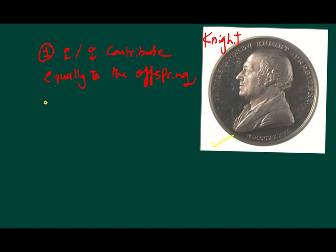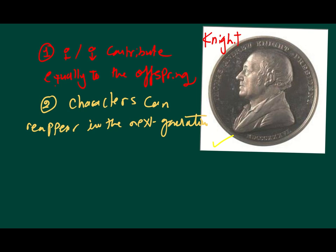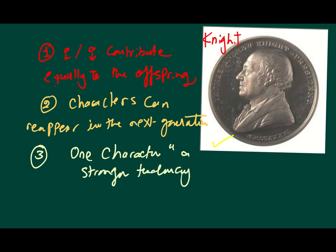Secondly, he said that characters such as white flower color that apparently disappear in offspring can reappear in the next generation. He said that the inheritance is discrete rather than blending. Three, he said that one character such as red flower color can show a stronger tendency than the alternative character. And this is what supports when Mendel says dominant and recessive.